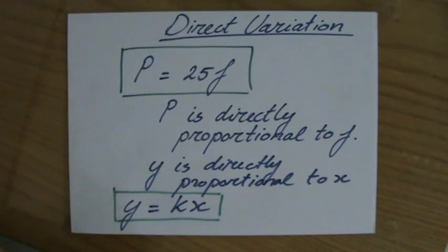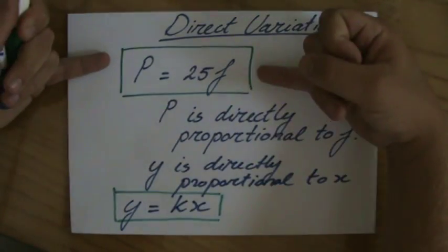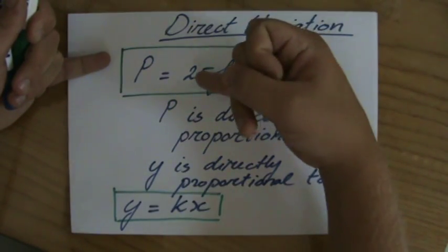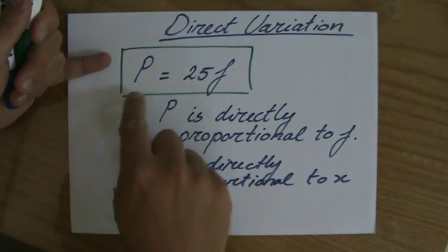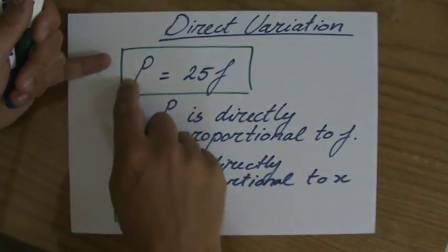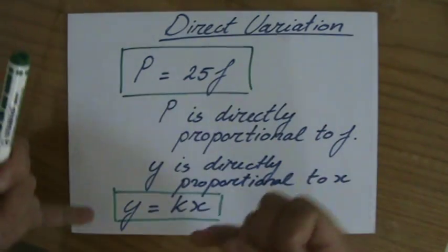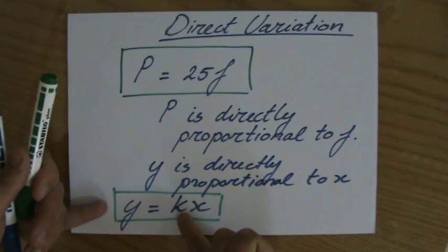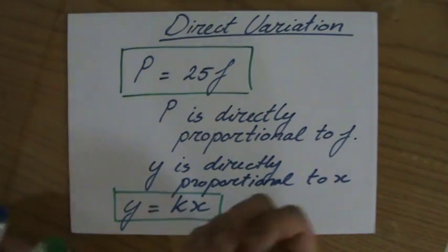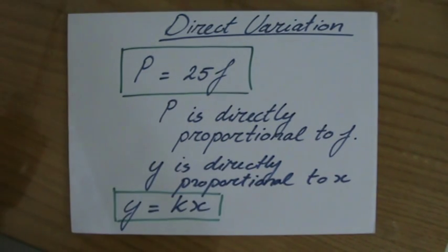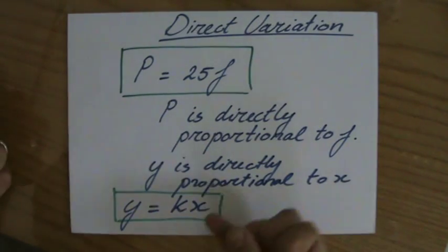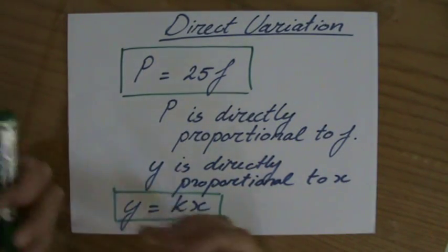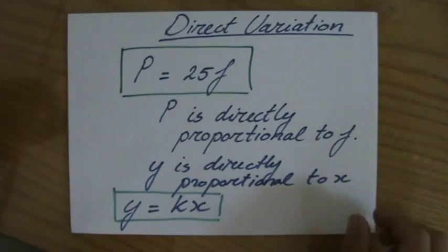Back to the footballs, that constant was 25, so P equals 25f. Y equals a constant times x. When you are solving direct variation problems, most of the time you have to find that constant first, and then you can answer particular questions. I'm going to give you an example now.